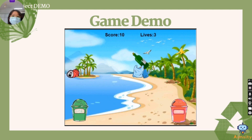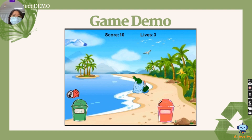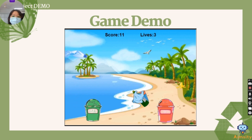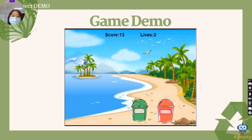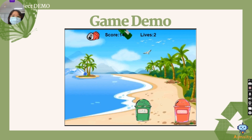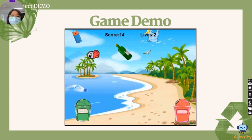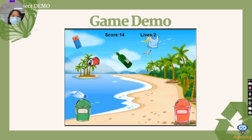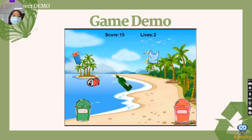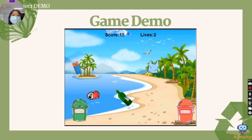If the score is more than 10, it will be considered a win. If rubbish is collected into the wrong bin, a life is deducted. After 3 lives are deducted, the game will end.